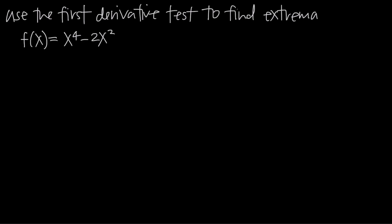When we want to use the first derivative test, we're going to follow the same process every time. We always use the same method to find critical points of the function, then use the first derivative test to test them, and then draw conclusions about extrema. We're always going to start with our original function f(x) and take its first derivative f'(x).